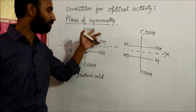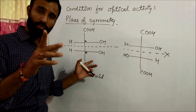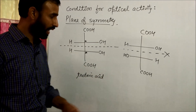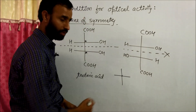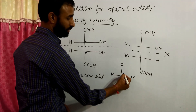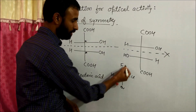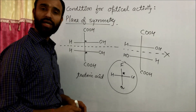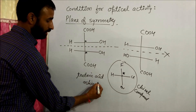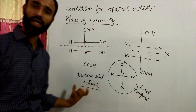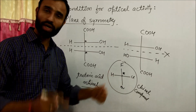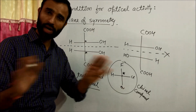A chiral carbon is a carbon attached to four different atoms or groups. Remember, if a molecule has only one chiral carbon, it again has no plane of symmetry — for example, a carbon attached to four different groups is a chiral carbon. That molecule is optically active, and it is called a chiral compound. An achiral compound has dissymmetry only if it has a single chiral carbon with no element of symmetry.